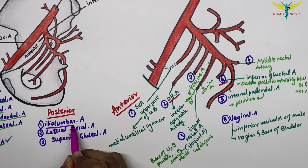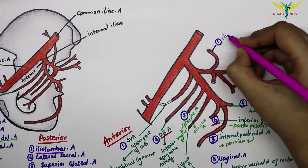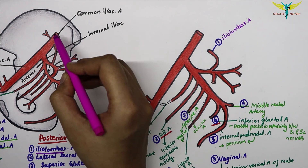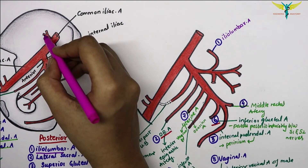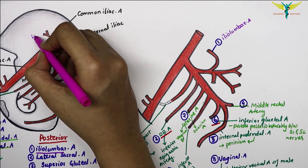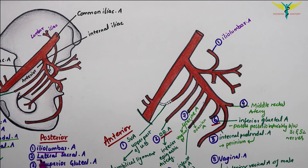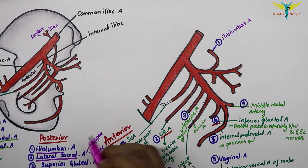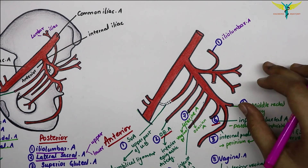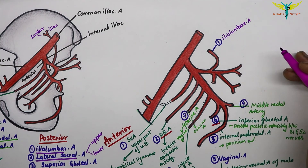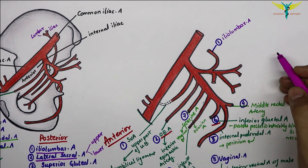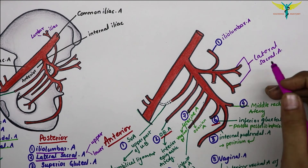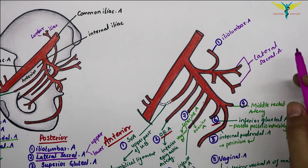The first branch of the posterior division is the iliolumbar artery. It ascends across the sacroiliac joint, passes behind the external iliac vessels, and reaches behind the psoas major where it divides into lumbar and iliac branches. The second branch is the lateral sacral arteries, which are two in number — upper and lower. They run downwards and medially over the sacral nerves, and their branches enter the sacral canal through the anterior sacral foramina. The terminations emerge through the dorsal sacral foramina to supply muscles and skin over the dorsum of the sacrum.